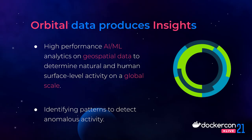So who's Orbital Insight? What do we do? Orbital Insight is a large data supplier and analytics provider where we take geospatial data from anywhere on the planet, from any overhead sensor, and translate that into insights for the end customer. We have a suite of high-performance artificial intelligence and machine learning analytics that run on this geospatial data, and we build them to specifically determine natural and human surface-level activity anywhere on the planet. We take any type of data associated with a latitude and longitude and identify patterns so that we can detect anomalies.